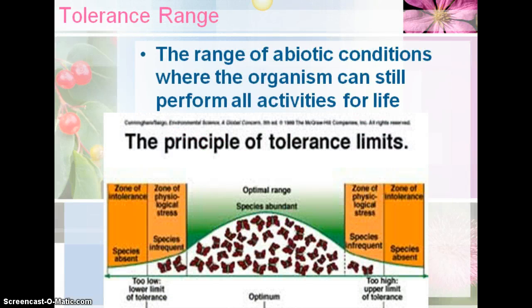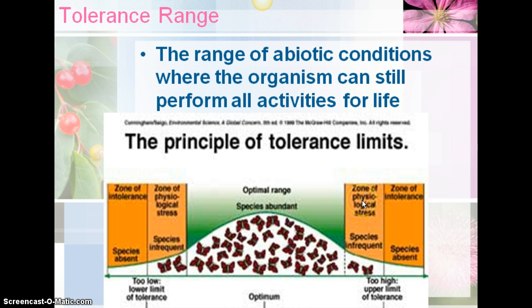The tolerance range is the range of abiotic conditions where that organism can still perform all of its normal daily functions — all the living things it needs to do in order to survive. In the picture, we have the optimal range — the range of temperature, soil type, pH levels, and water availability where the organism survives the best. Outside of that range, there's a zone of stress where very few organisms survive, and then the zone of intolerance, where that species cannot survive at all.